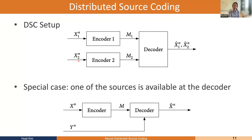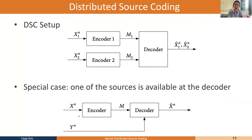We consider a special case of distributed source coding where one encoder — say encoder two — has sufficient bandwidth or can compress its message losslessly, so X2 is available readily to the decoder. Changing notation slightly: the encoder has source X, and the decoder has access to a lossless version of Y, where X and Y are correlated. So X is the source, Y is side information freely available at the decoder but not available to the encoder. This is the DSC (distributed source coding) special case we focus on.